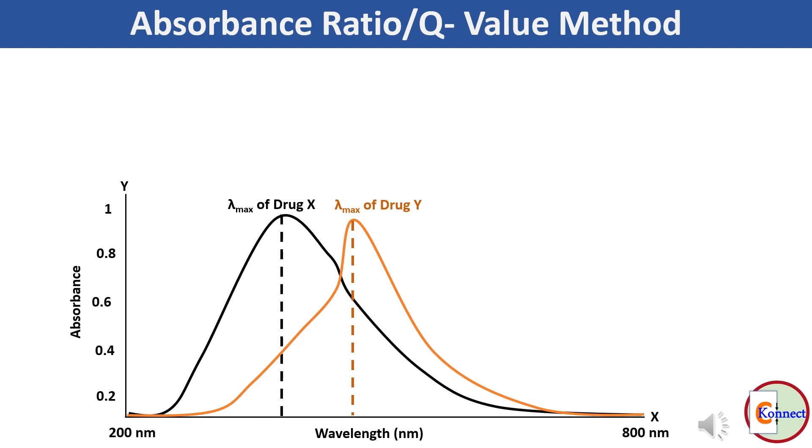Here we have UV visible spectra of two drugs, drug X and drug Y. Drug Y absorbs some radiation at lambda max of drug X.